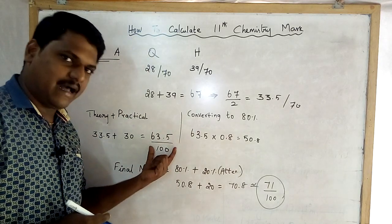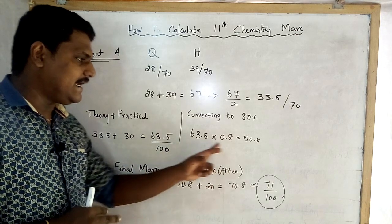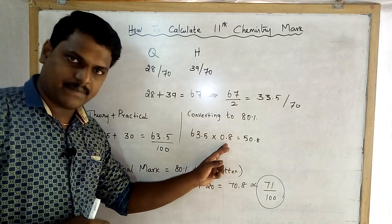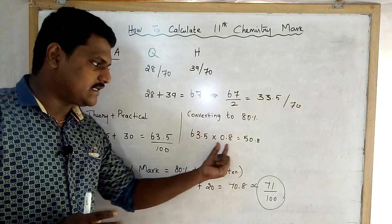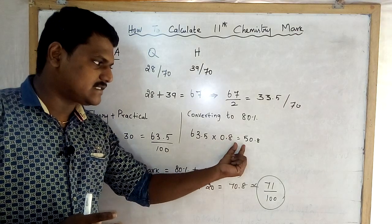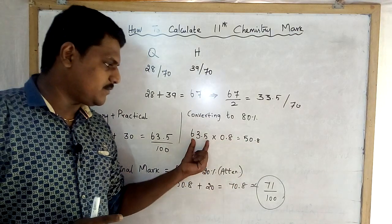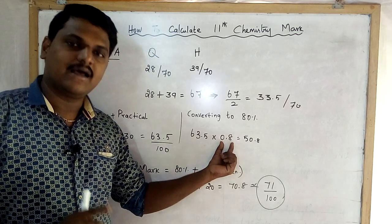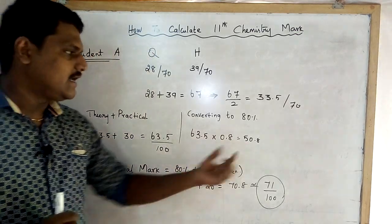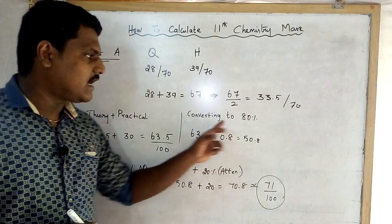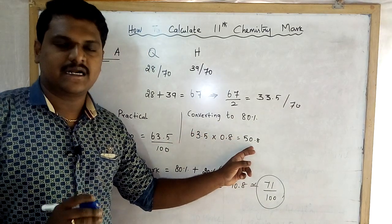Attendance is a 20 percentage mark. How do you convert this mark? If attendance is 80 percent, it is 0.8. So 63.5 multiplied by 0.8 equals 50.8. This converts to 80 percentage mark — that is the 80 percentage mark from quarterly and half-yearly practicals.